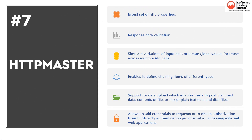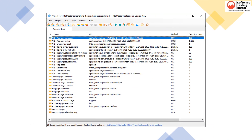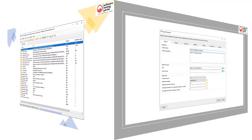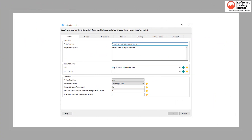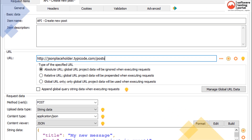HTTP Master is the seventh tool in the list. It is a development and test tool for REST web services and API applications. It can display and validate the most common REST formats: XML, JSON, and HTML. Features include a broad set of HTTP properties, response data validation, simulation of input data variations or global values for reuse across multiple API calls, support for data upload, and a free 30-day trial. This is the project view of HTTP Master, and you can set project properties and provide input such as URL and method like GET, POST, etc.